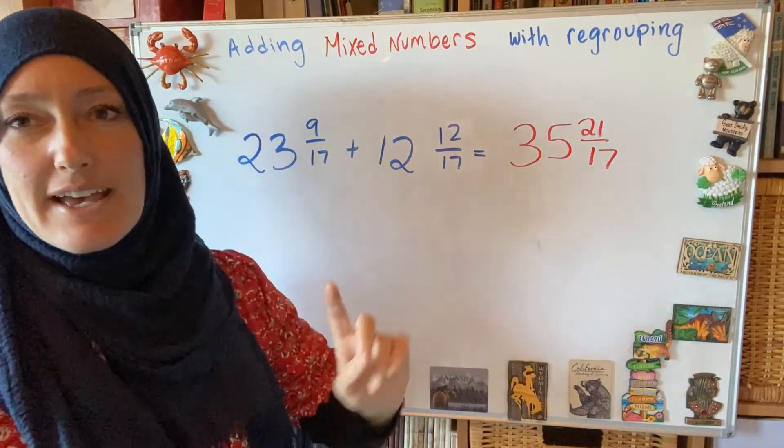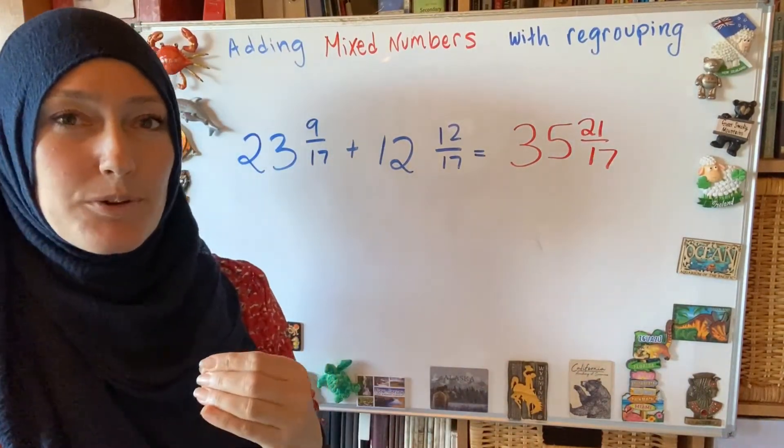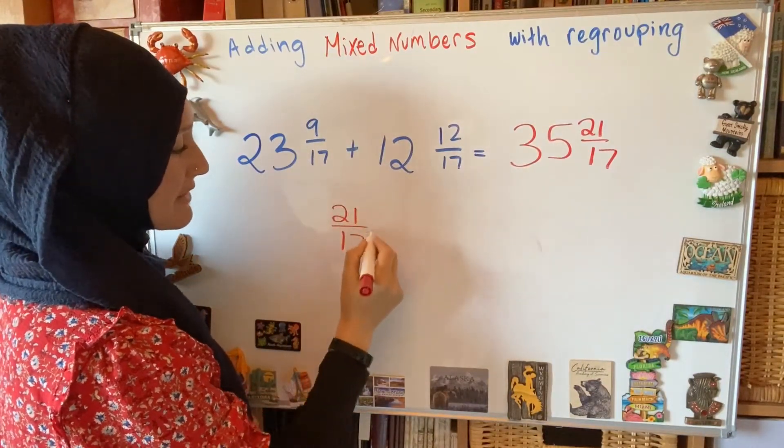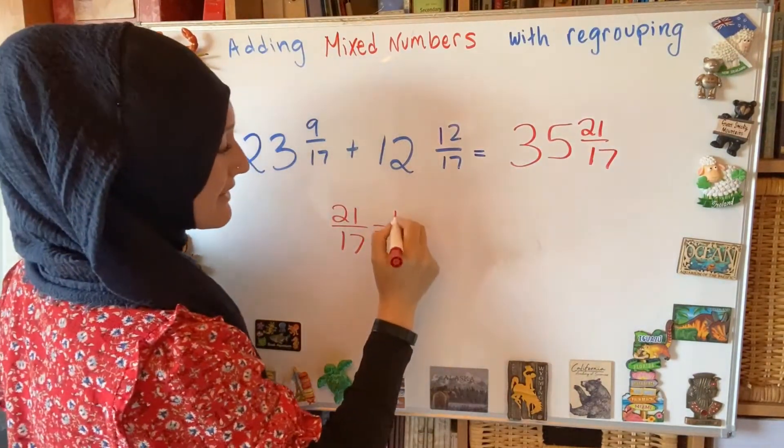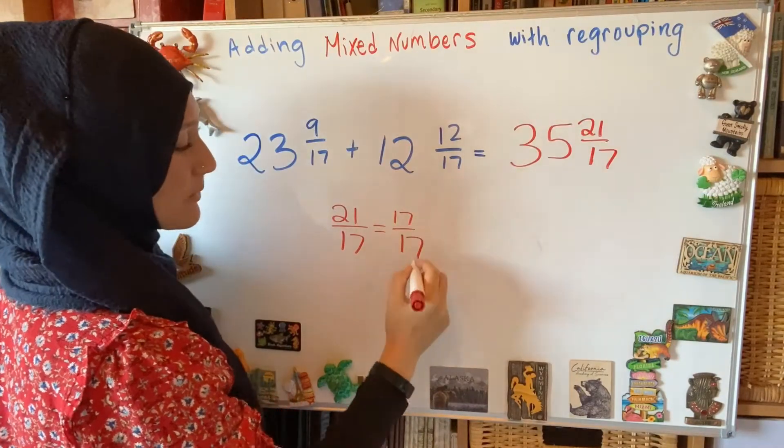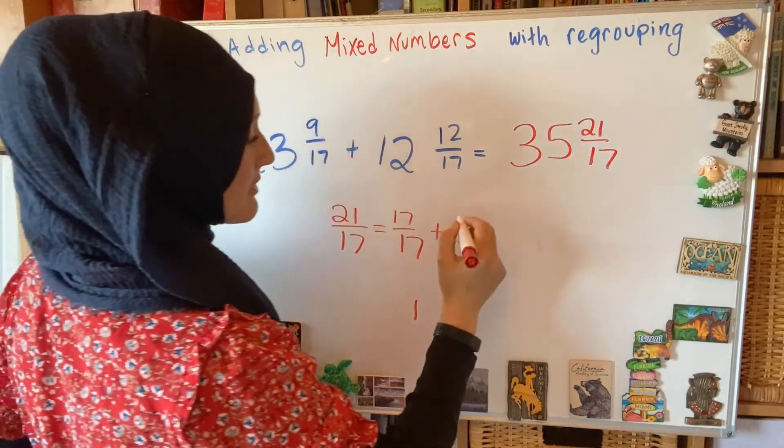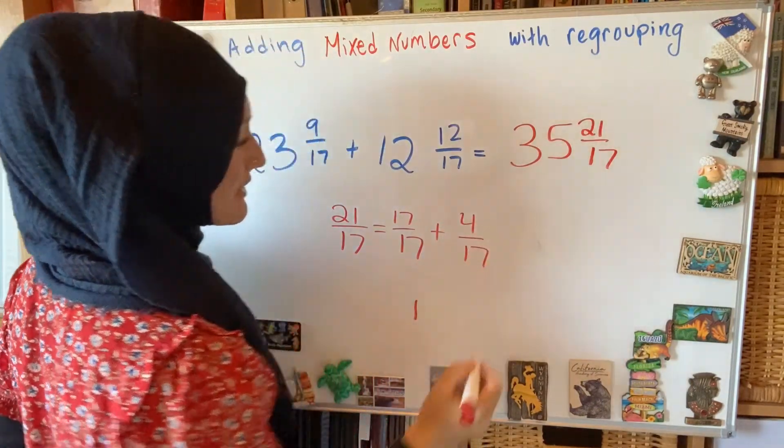I check over here, I can't have an improper fraction, I need to take out the whole amounts that are hiding in there. So how do I do that? I remember that 21 seventeenths is like saying 17 seventeenths, that's 1. And whatever's left, 4 seventeenths.